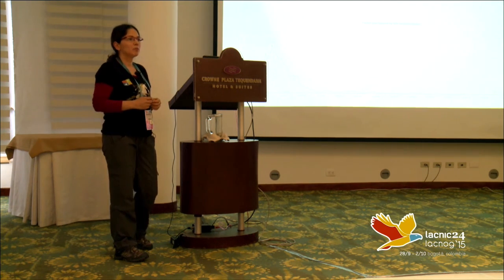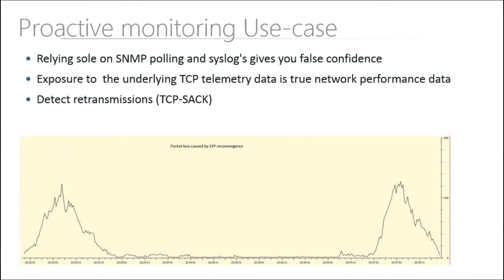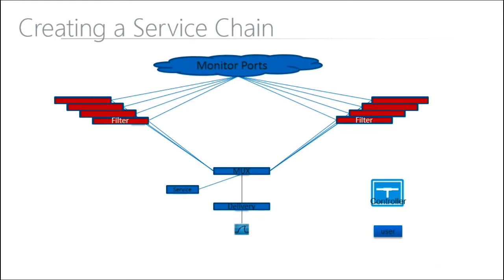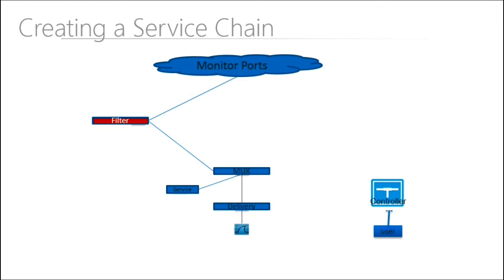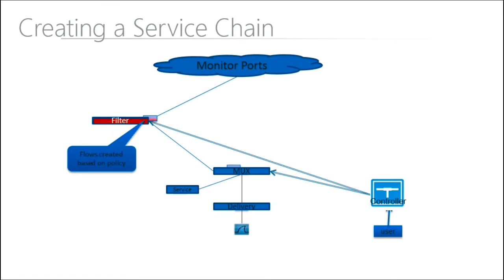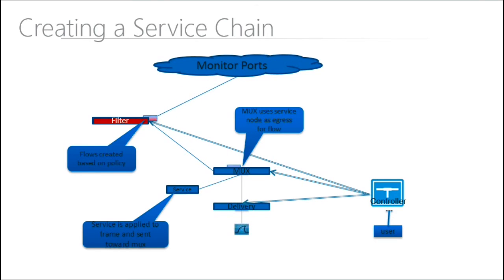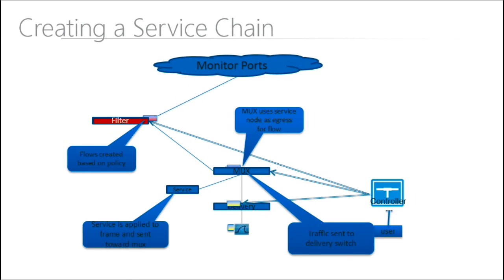Another case is proactive monitoring. Sometimes we have problems where people say there is something in the network — no packet loss but maybe some latency or other problems for voice circuits. We try to do proactive monitoring if there is a problem that our customers are having. The controller programs the filters, creates the flows based on the policy we program, and then the flows are sent to the muxes, which send to the service layer and then to the delivery.